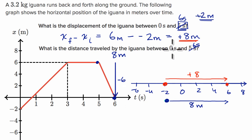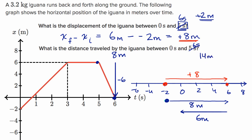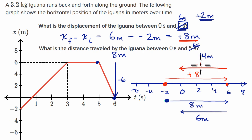For distance between zero and six seconds, you'd have the eight meters traveled to the right, and then even though you're going back to zero — six meters to the left — you wouldn't subtract it. The total path is eight meters to the right and then six meters to the left, so you add them: 14 meters. For displacement you subtract the six, giving plus two; for distance, eight plus six gives a total path of 14.